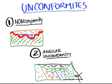And the boundary between these two different sequences of sedimentary rocks, we call it angular unconformity.